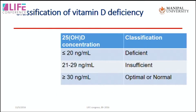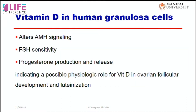What is the normal level of vitamin D? The normal level is more than 30 nanograms per milliliter. A level of 21 to 29 nanograms per milliliter is considered insufficient, and less than 20 is definitely deficient. For anyone with levels below 20, vitamin D supplementation should be considered — the reasons for which will become clear in the next few slides.